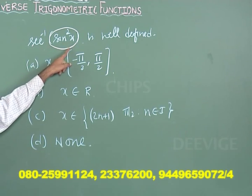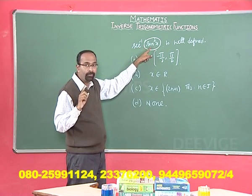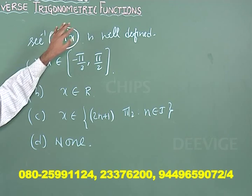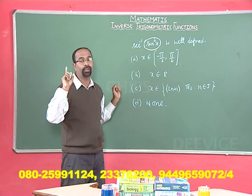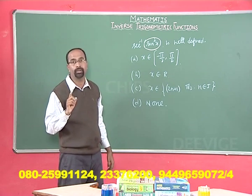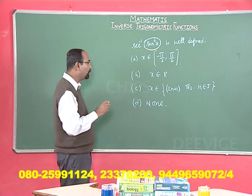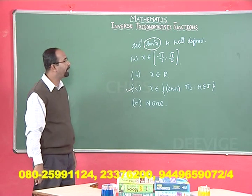Therefore, sec⁻¹(sin²x) is defined only if x = π/2, 3π/2, 5π/2, 7π/2, … or −π/2, −3π/2, −5π/2, −7π/2, and so on. That is, x belongs to odd multiples of π/2. So Option C is correct.